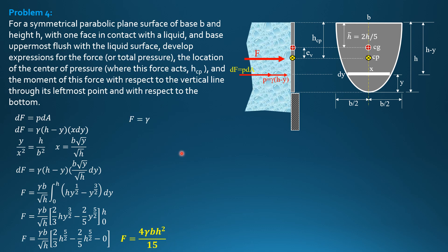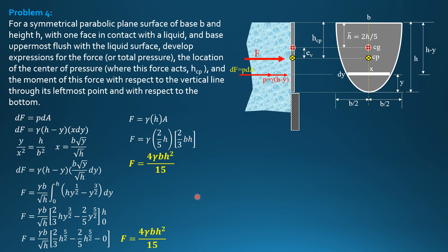Using the formula F equals gamma times h-bar times area, where h-bar is two-fifths of h and the area of a parabola is two-thirds base times height, i.e., two-thirds b h, gives the same result: F equals 4 over 15 gamma b h squared. As simple as that, if you know the area and the location of the centroid of the parabola.